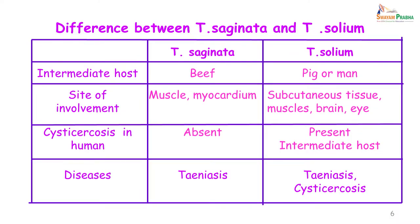Let us look at some differences between Taenia saginata and Taenia solium. For Taenia saginata the intermediate host is beef cattle, and for Taenia solium it is pigs or even man. The site of involvement in intermediate hosts for Taenia saginata is the muscle and the myocardium, and for Taenia solium you will find it in the subcutaneous tissue, muscles, brain and sometimes even the eyes. Cysticercosis in man is seen with Taenia solium and not with Taenia saginata.